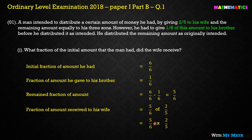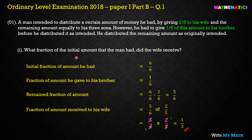We can solve it: 5/6 of 2/5 — 'of' means multiplication. We divide 5 by 5, giving 1, and divide 2 into 6, giving 3. So it gives us 1/3. That is the answer: the fraction of the initial amount the wife received is 1/3 of the total amount.